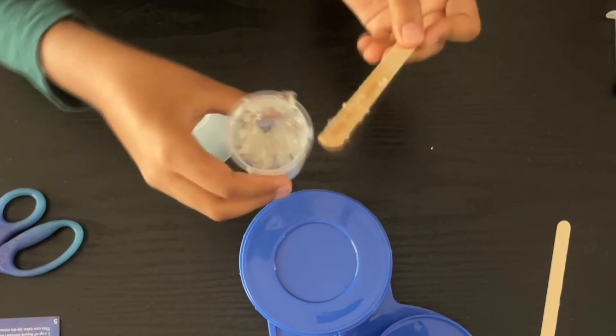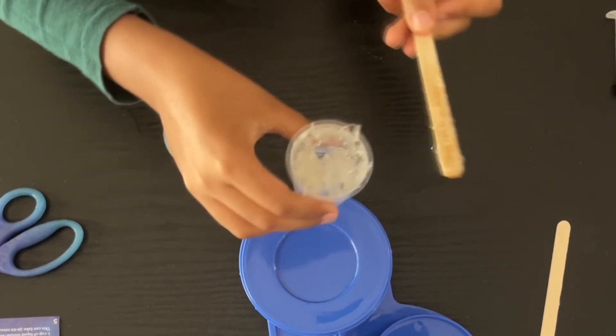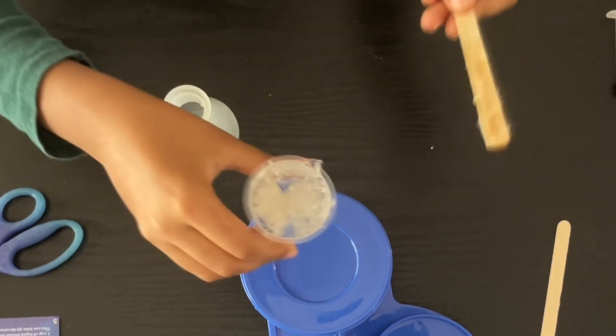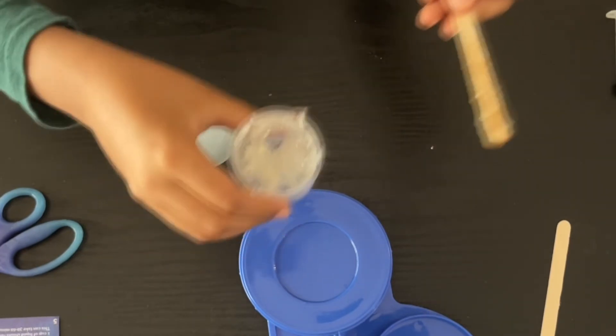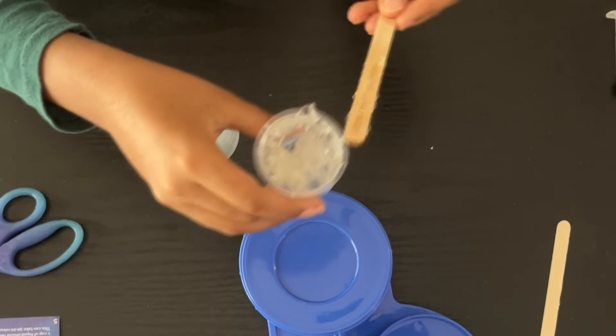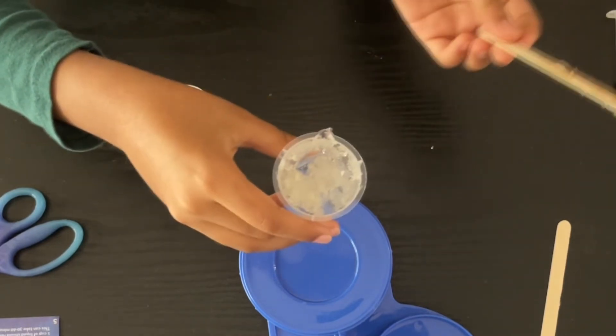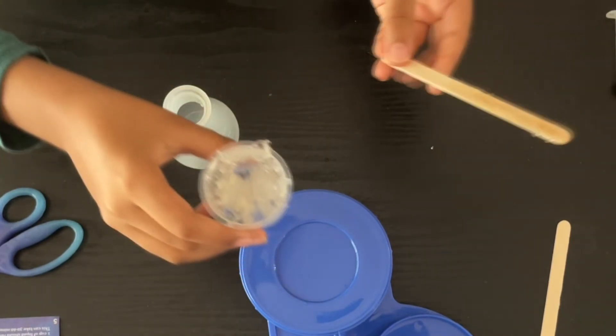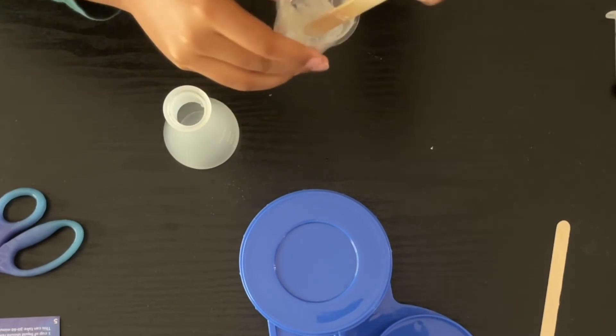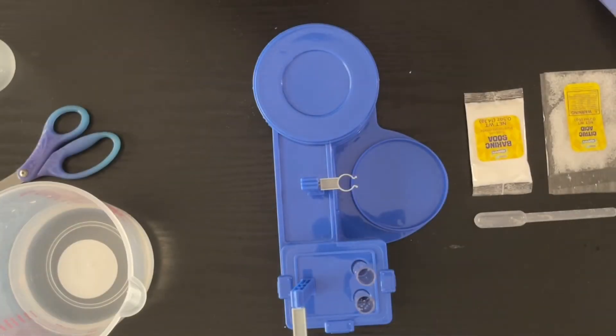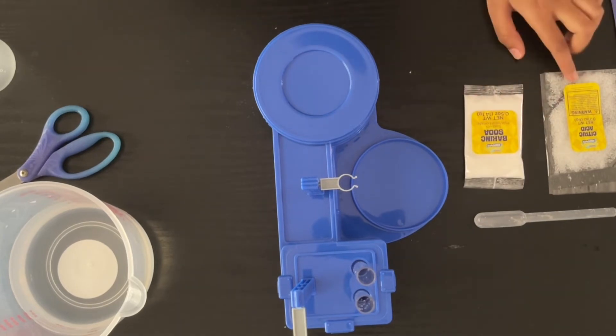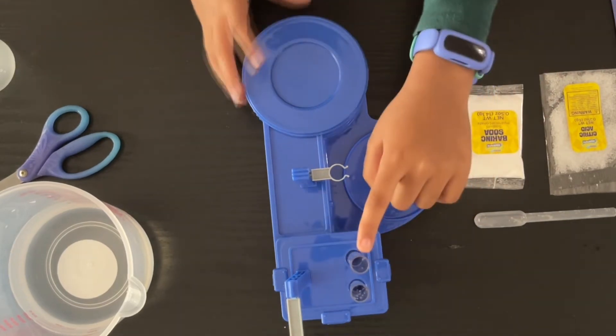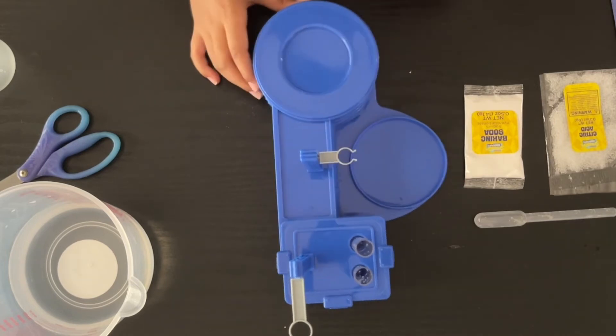As the instructions said, we need to charge this with some strong light. In my balcony sunlight, I'll keep this out for 7 minutes. By the time, I will show you how to do number 3 experiment, fizz and sea foam. For this, we'll be needing baking soda, citric acid, a test tube, and some water.